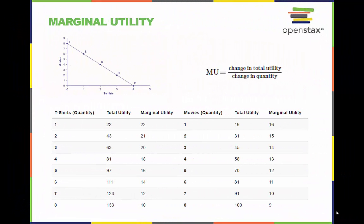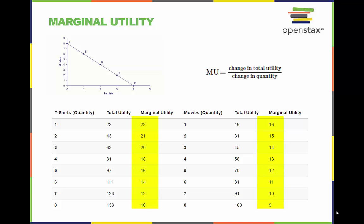In order to best maximize Jose's utility within his budget, we must first learn the concept of marginal utility and how to calculate it. Marginal utility is the additional or incremental utility provided by one additional unit of consumption. We can calculate it using this equation: the change in total utility divided by the change in quantity.